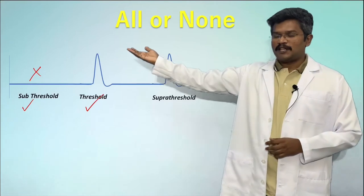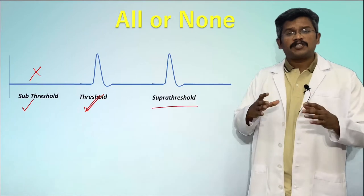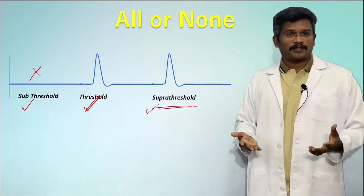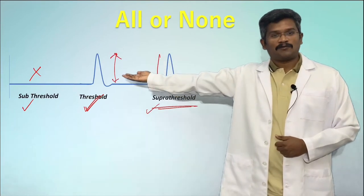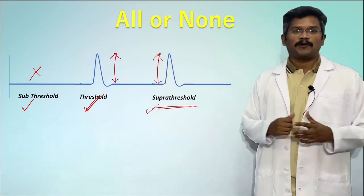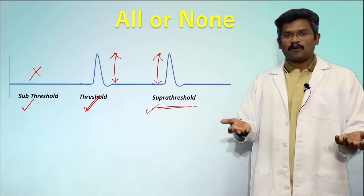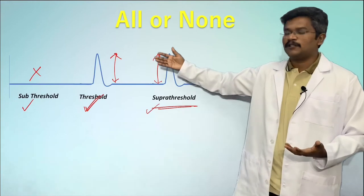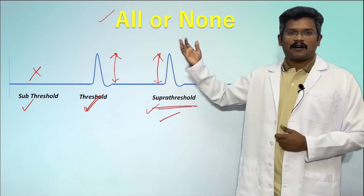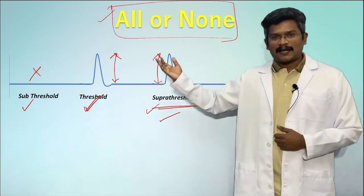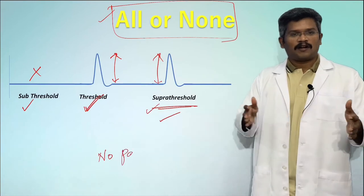With a subthreshold stimulus there is no action potential; with a threshold stimulus there is an action potential. Even if the stimulus strength is greater than threshold, it also results in an action potential of similar magnitude, because all available voltage-gated channels are already open and there is no further increase in opening with higher stimulus strength. This is referred to as the all-or-none principle — either the action potential is present or it is not; there is no half or small action potential.